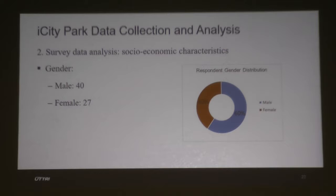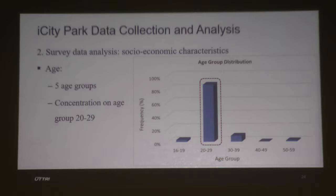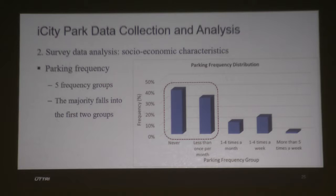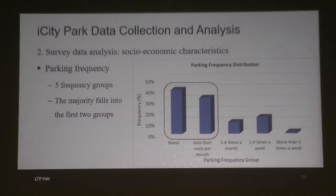For the survey data analysis, univariate analysis shows 60% male and 40% female respondents. The age distribution is concentrated between 20 and 29, reflecting the targeted student respondents. Parking frequency is considered significant to parking choices, as people with more on-street parking experience may have different parking strategies. The majority of respondents are students whose daily commutes are walking, transit, and cycling, while later groups mainly comprise faculty members.